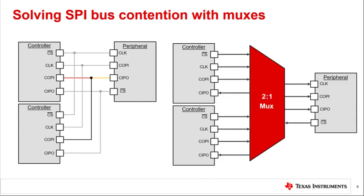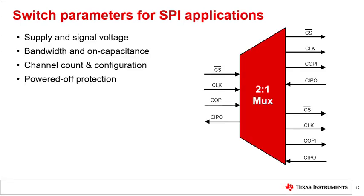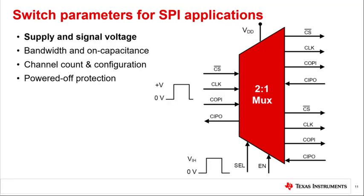Here we see how bus contention is solved with the use of a MUX. Because the SPI bus has no formal or standardized specification, it is important to align your switch parameters with those of the SPI devices in your system. Key parameters to align are voltage and bandwidth, taking into consideration additional factors such as on-capacitance, channel count, and features such as powered-off protection. The supply voltage, signal voltage, and continuous current through the switch must be in compliance with the absolute max ratings of the switch. Most switches support input signals from rail to rail, and some switches even support input voltage beyond supply. Be sure that your control signal voltages align with the VIH and VIL of the switch for proper operation.